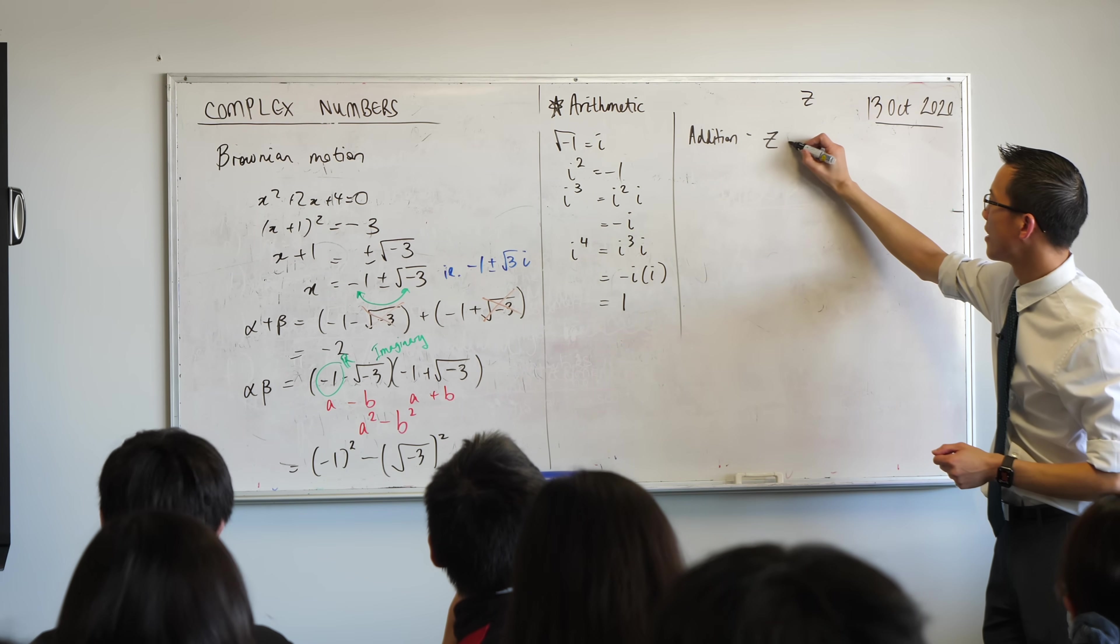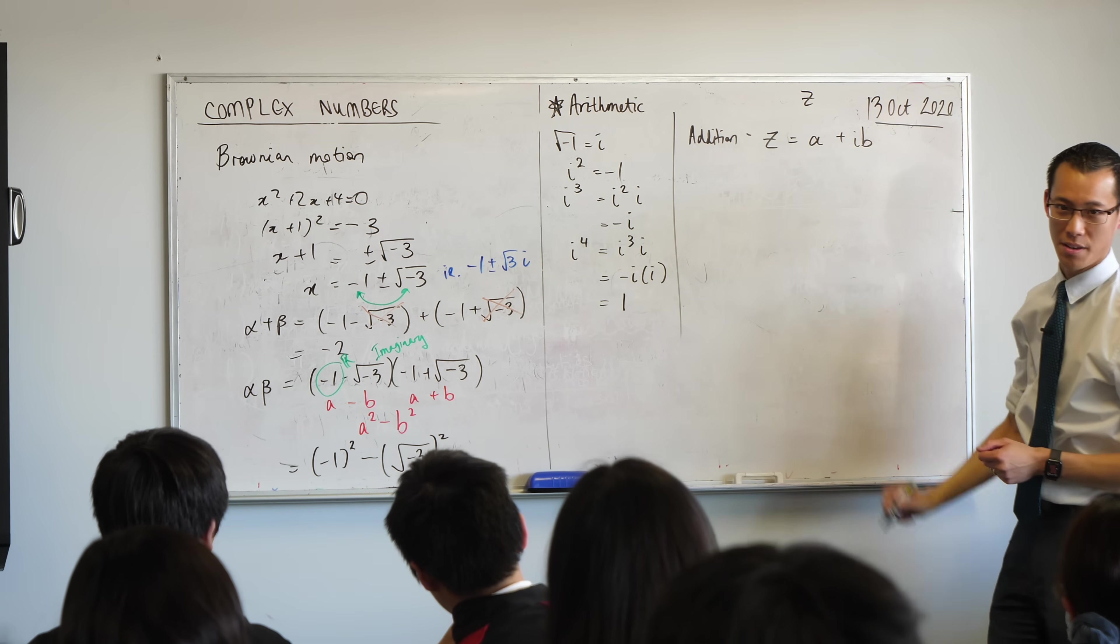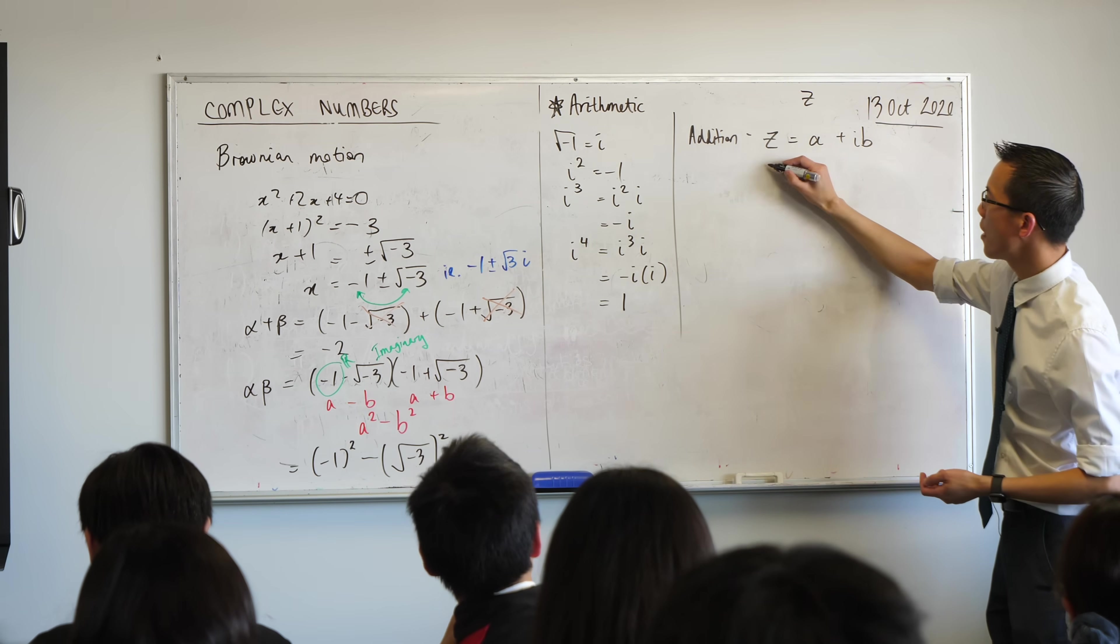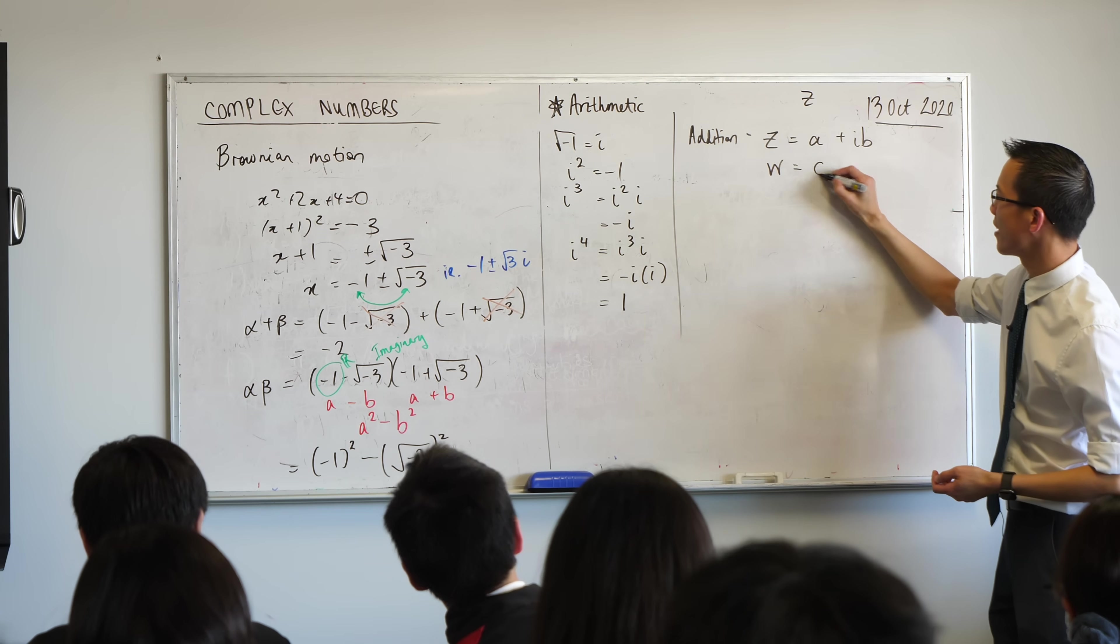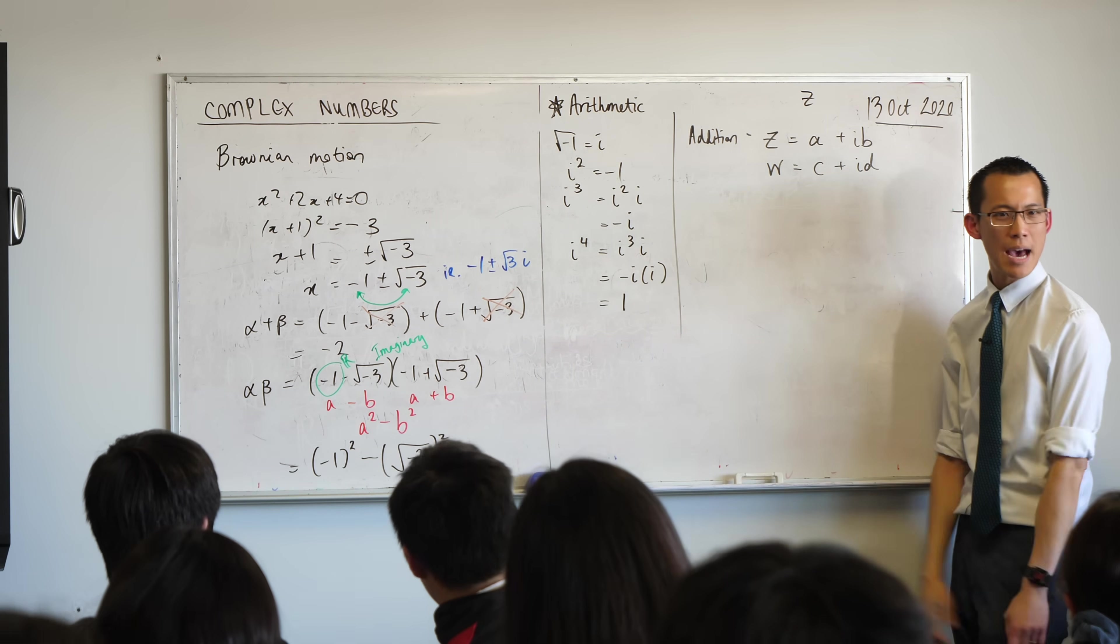If I were to add a number which has a real component and an imaginary component with some other number that had its own real component and its own imaginary component, what happens?